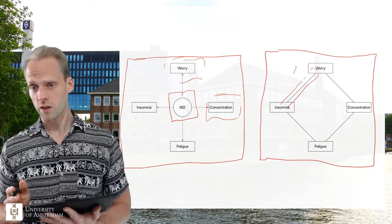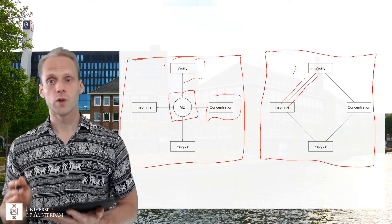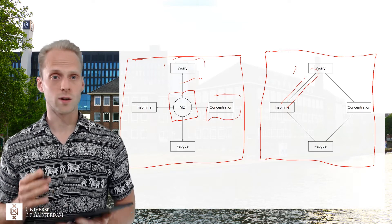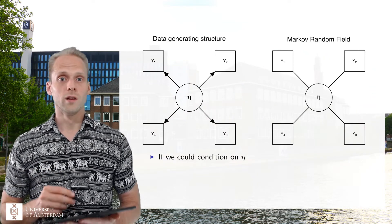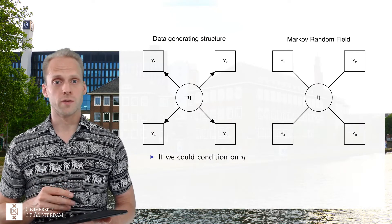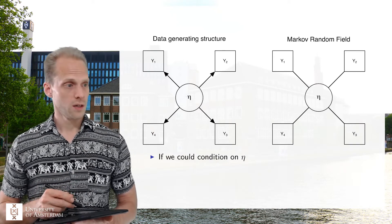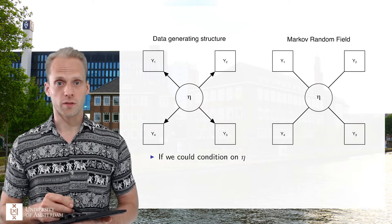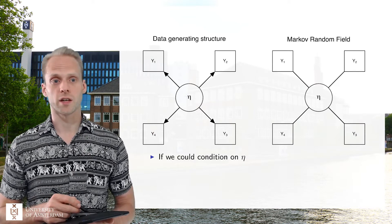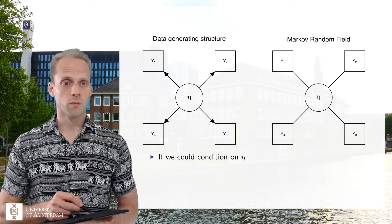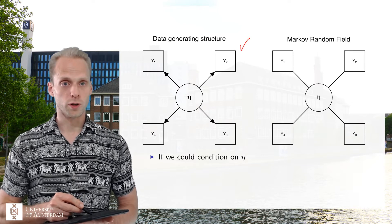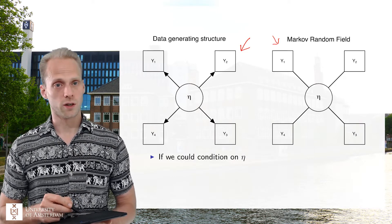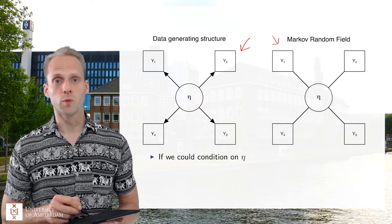So this seems like very different frameworks, but it turns out that these two frameworks are actually very closely related. We already learned about how directed networks relate to undirected networks. We can see that a Markov random field — an undirected network model — is very similar to a directed network model. So if the latent variable model is the true model, then the corresponding network model would be this undirected network model.